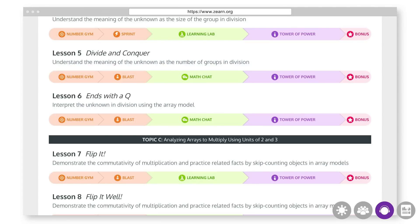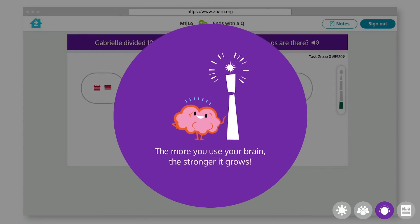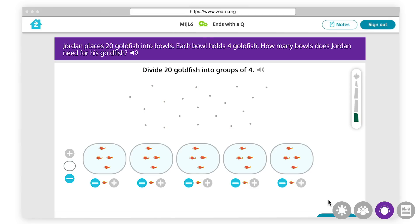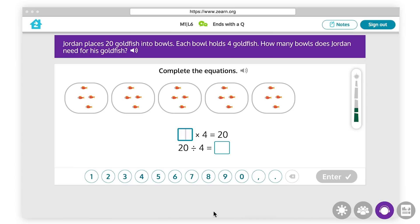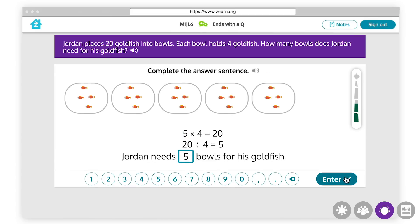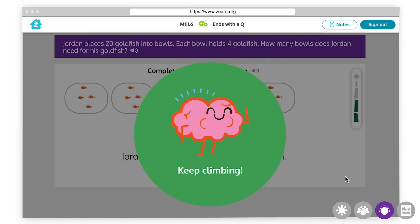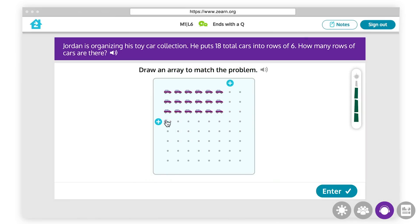After guided practice, students demonstrate their new learning in the Tower of Power. In the Tower of Power, students work through multiple stages of independent practice, solving problems that become more complex and less scaffolded as they progress. Students need to answer all questions correctly to complete the Tower of Power and unlock the next lesson in the mission. This Tower begins with a concrete model to determine the unknown number of groups, and progresses to using a different strategy, an array, to solve the problem.